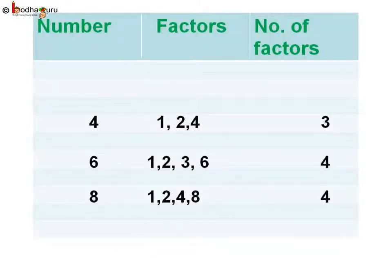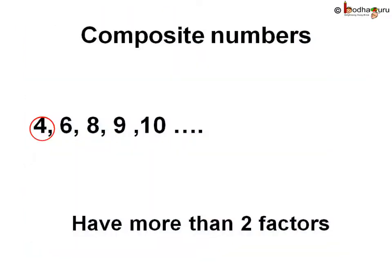Also there are numbers having more than 2 factors. Like number 4 which has 3 factors: 1, 2 and 4. Same way 6 has 4 factors: 1, 2, 3 and 6. So 4, 6, 8, 9, 10 and so on have more than 2 factors. These numbers are called composite numbers.